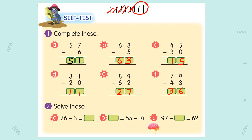For question 2A: 26 minus 3. Where should you put 3? You have to put 3 below 6 — below 6. Now, 6 minus 3 becomes 3. Write down 2. So your answer is 23.